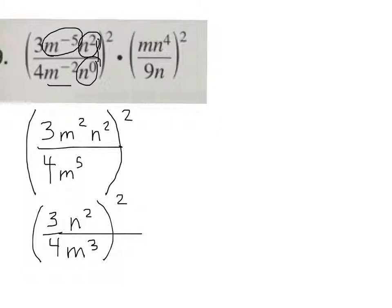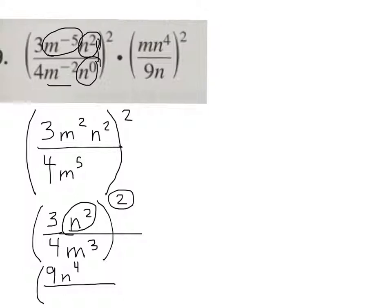See how I simplified everything inside the parenthesis before squaring it? So now let's go ahead and square everything inside. 3 squared is 9. And n squared squared — that's a power to a power, so you multiply the exponents. It'll be n to the 4th. 4 squared is 16 — that means 4 times 4. And then m cubed being squared is another power to a power, so I multiply the exponents — it'll be m to the 6th. That's the first one simplified.